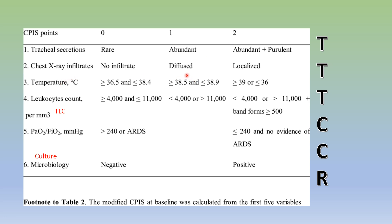For infiltrates on chest X-ray: if diffuse, 1 point; if localized, 2 points. For temperature: if more than 36°C and less than 38°C, it is given 0 points. If more than 38°C and less than 39°C, 1 point. If more than 39°C or less than 36°C, 2 points.